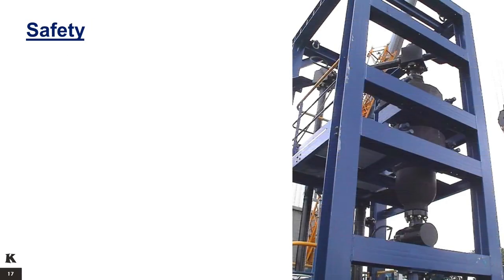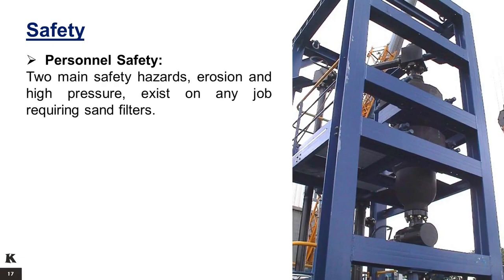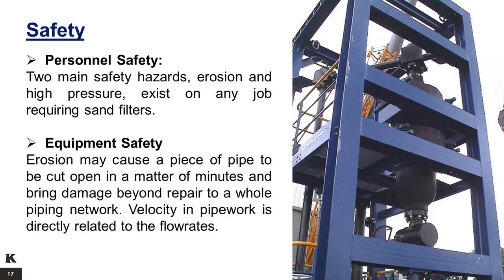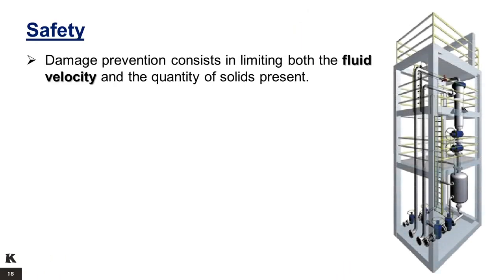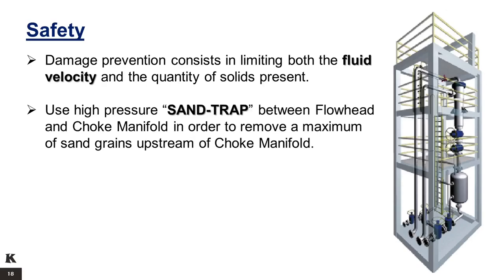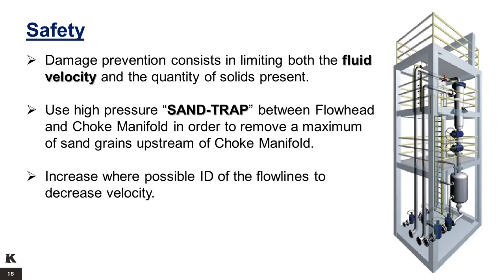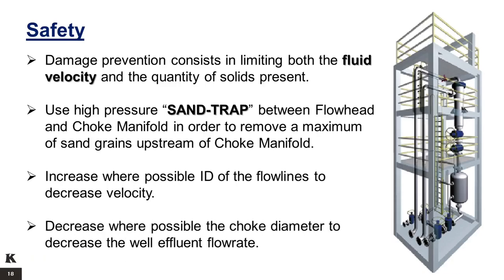Safety. Two main safety hazards — erosion and high pressure — exist on any job requiring sand filters. Erosion may cause a piece of pipe to be cut open in a matter of minutes and bring damage beyond repair to a whole piping network. Velocity in pipework is directly related to flow rates. Damage prevention consists of limiting both the fluid velocity and the quantity of solids present. Use a high-pressure sand trap between the flow head and choke manifold to remove a maximum of sand grains upstream of the choke manifold. Increase, where possible, the ID of flow lines to decrease velocity. Decrease, where possible, the choke diameter to decrease the well effluent flow rate.